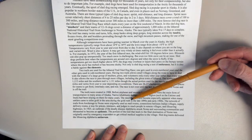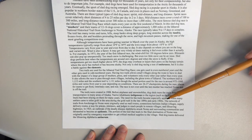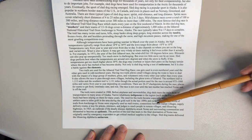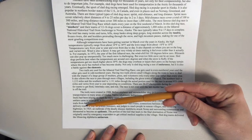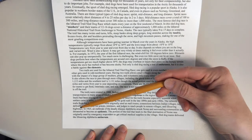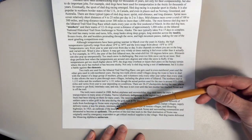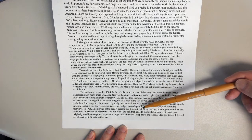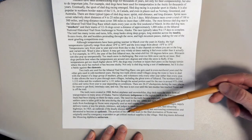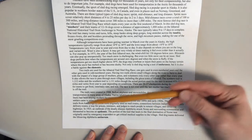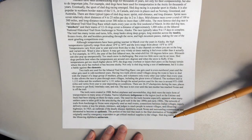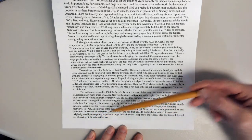The network of trails from Anchorage to Nome were originally used as mail routes, connections between Indian villages, supply delivery routes, a way for priests, ministers, and judges to reach people in remote villages, and life-saving highways. In 1925, an outbreak of the deadly disease diphtheria struck Nome and surrounding communities and threatened to become an epidemic. The portion of the trail that leads to the final destination of Nome was originally used by emergency responders to get critical medical supplies to the village. Sled dog teams delivered the life-saving diphtheria antiserum.